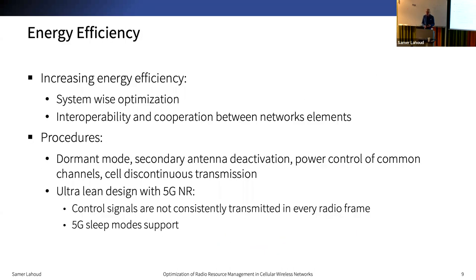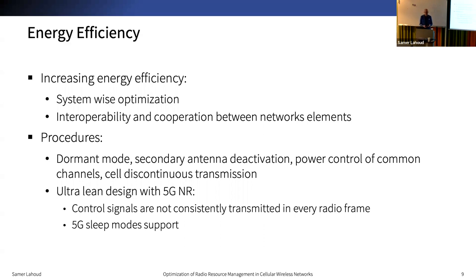Increasing energy efficiency in cellular wireless networks requires system-wise optimization, taking into account various requirements such as quality of service, initial access and mobility. Energy reduction can be obtained by switching off one or more carriers, antennas, or even cells, as in discontinuous transmission. Similarly, 5G NR follows a new ultra-lean design in which control signals are not consistently transmitted in every radio frame, but on demand and scarcely, according to the demand in the cell.